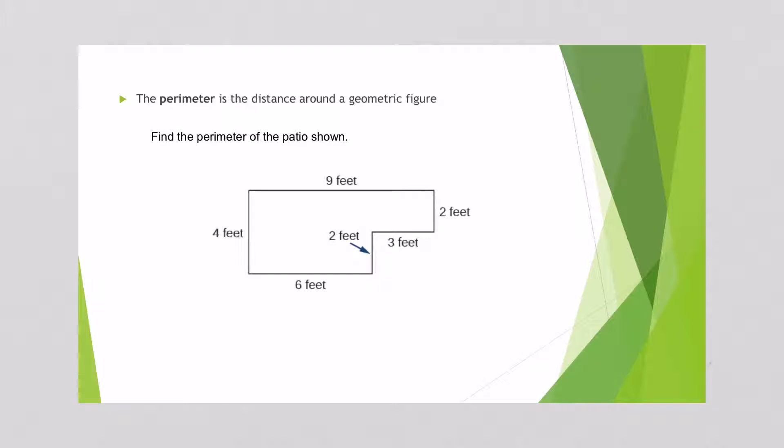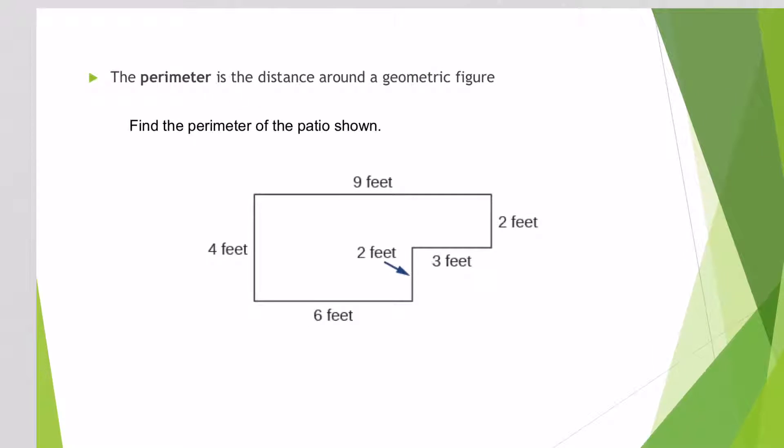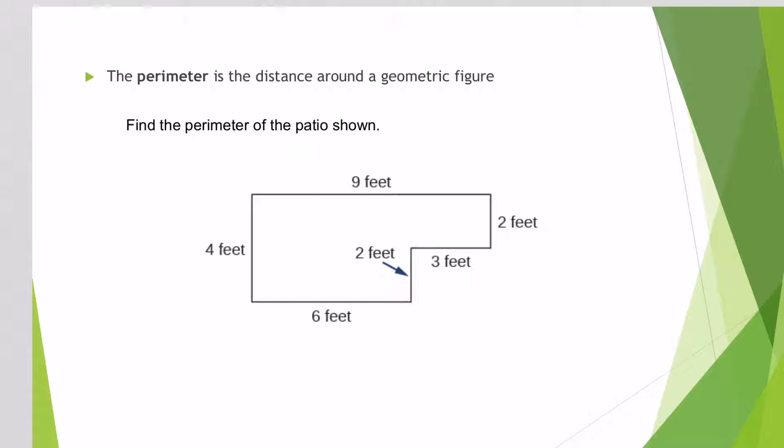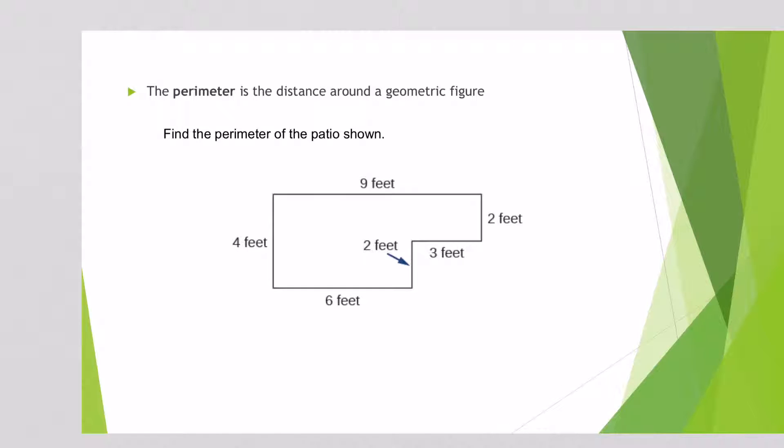In this problem, we're looking at perimeter, and I put the definition of perimeter at the top. Perimeter is the distance around a geometric figure. So I am looking at this figure. It looks like a backwards Oklahoma almost. And so in order to find the perimeter, you just add up all of the sides.